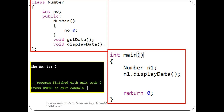No explicit call to the constructor is required — I cannot say 'n1.Number()'. Whenever execution reaches that line, the constructor gets called automatically, 'no' is initialized to the assigned value, and whenever the 'displayData' function is called, the value assigned by the constructor will be displayed. This is the use of the constructor: to initialize member variables.